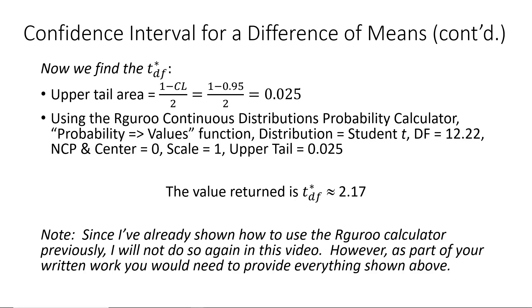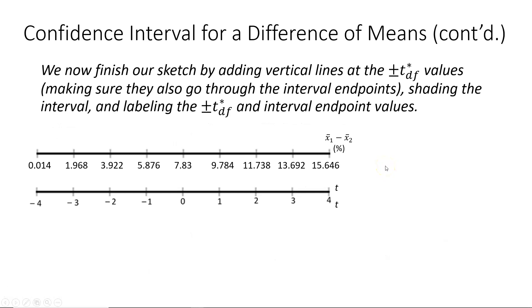So now that we've used our guru to find all of those numerical values, we're going to finish our confidence interval sketch by first of all adding vertical lines at the plus and minus t* values. And then we're going to shade the interval in between those vertical lines. And then lastly, we go ahead and label the plus and minus t* values at the bottoms of the vertical lines, and of course, the end points of the confidence interval at the top. And that completes the process for constructing our sketch for the confidence interval.